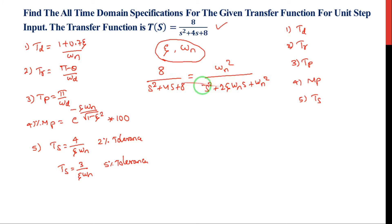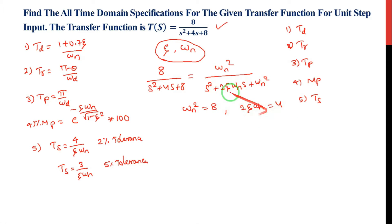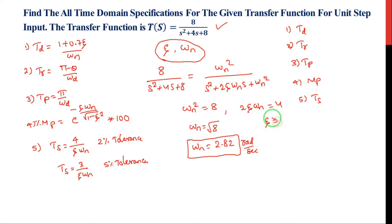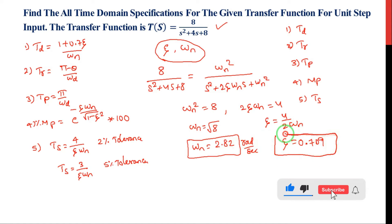Comparing the two expressions: omega-n squared equals 8, and 2 zeta omega-n equals 4. Therefore, omega-n equals the square root of 8, which is 2.82 radians per second. Then zeta equals 4 divided by 2 times omega-n, giving zeta equal to 0.709.